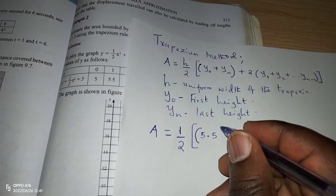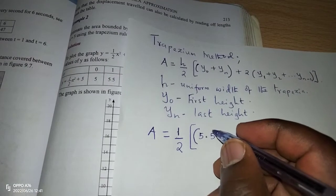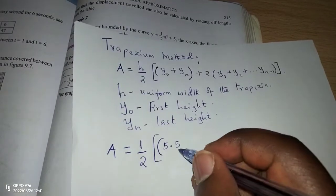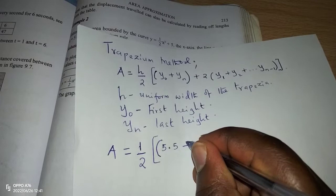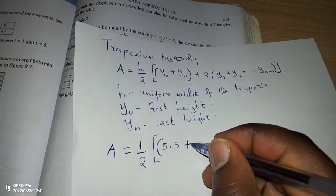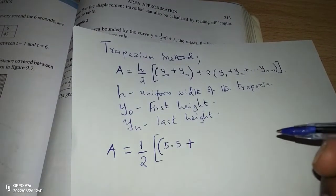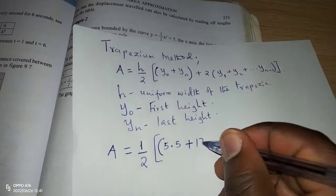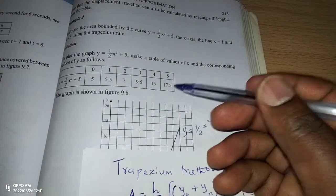Then we open the curl brackets and we have smaller brackets where the first y is 5.5, because when x equals 1, y is 5.5, plus the last value of y. That should be when x equals 5, and that will be 17.5.